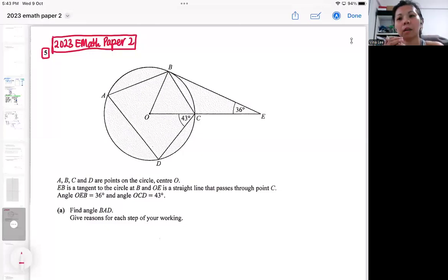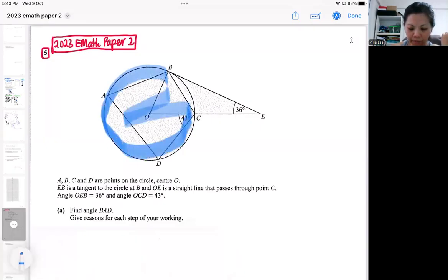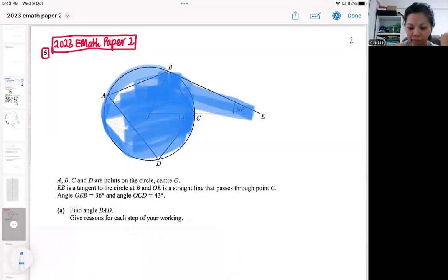This question is a combination of properties of circles, arc length, and sector. In case some of you cannot see the shading too clearly, there's shading involved. They actually shade the whole diagram, so literally the whole diagram is shaded.